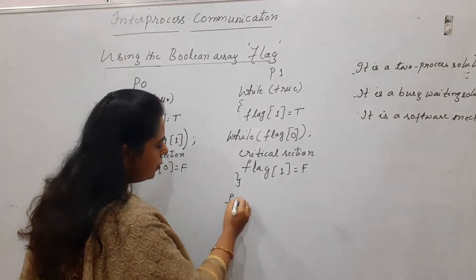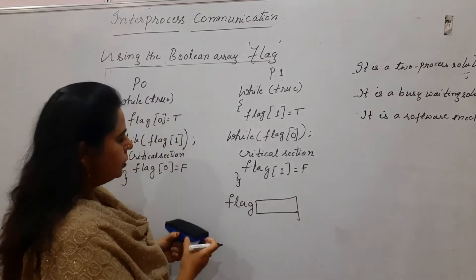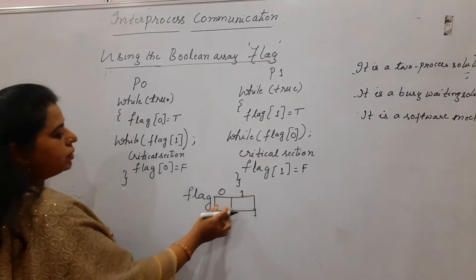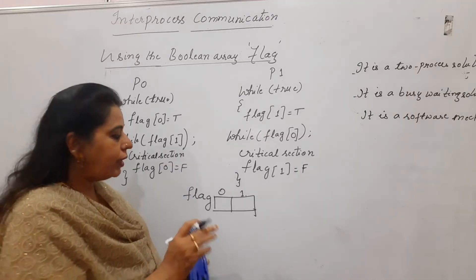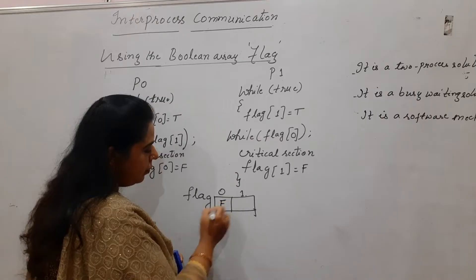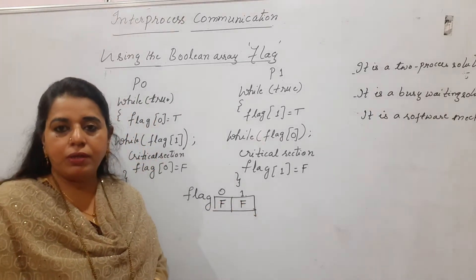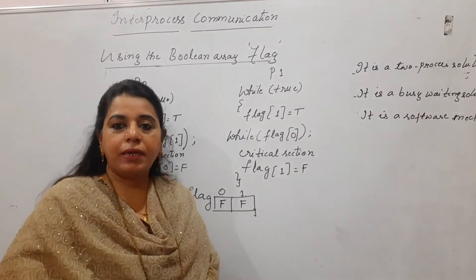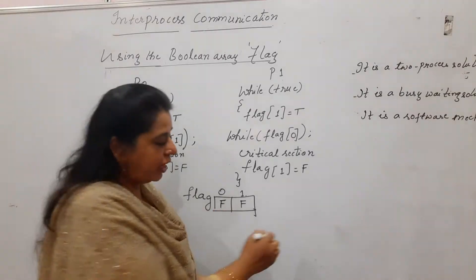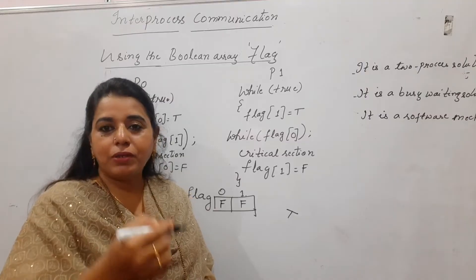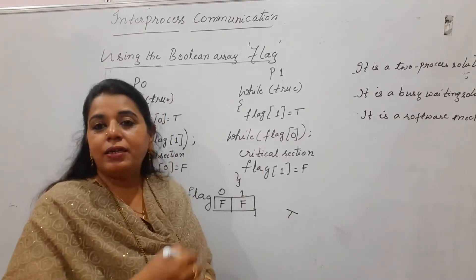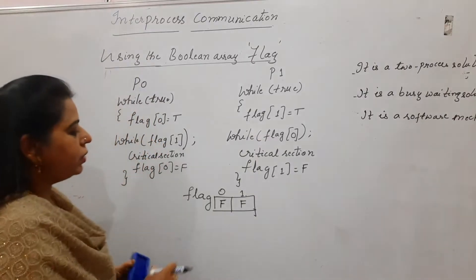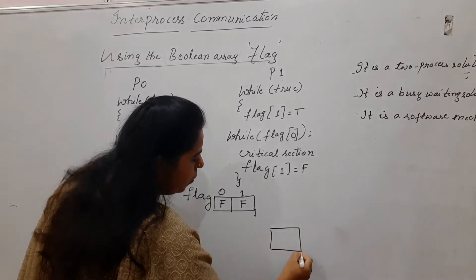This solution makes use of a boolean array called 'flag' which has only two slots: flag[0] and flag[1]. These two slots are meant for two processes P0 and P1. Initially the flag values for both processes will be false (F). A process sets its value to true (T) when it is interested to enter the critical section, and sets it back to false (F) when leaving. Initially, no process is in the critical section — it is vacant.